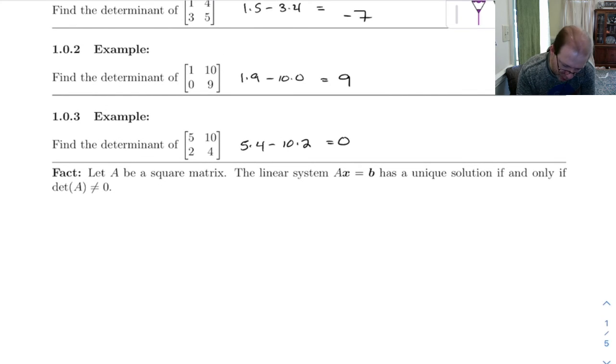And here's a fact that I sort of alluded to earlier. If A is a square matrix, then this linear system AX equals B has a unique solution if and only if the determinant of A is non-zero.